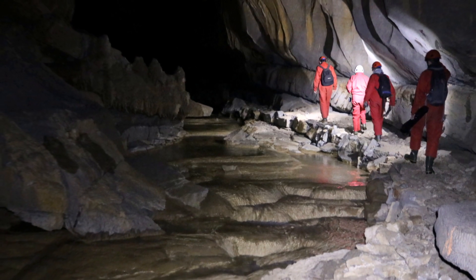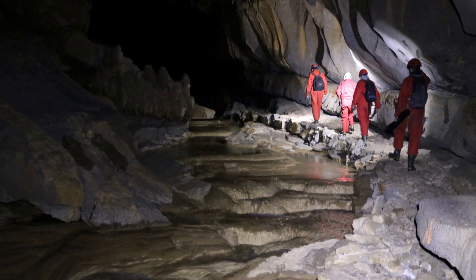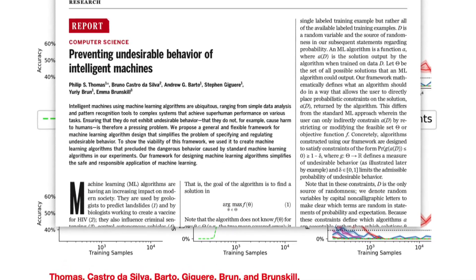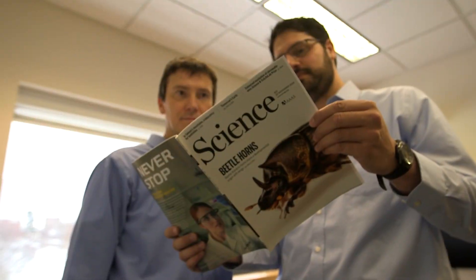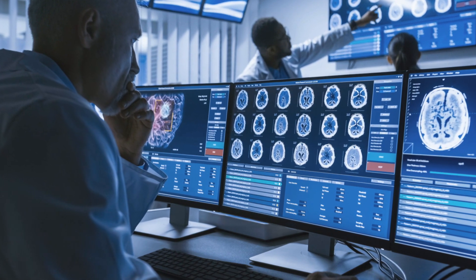This is important when the person using the algorithm is an expert in their own field — for example a medical expert or a geologist who knows all of the domain details — but they may not be an expert in machine learning and statistics. Seldonian algorithms make it much easier for users to make sure that bad behavior doesn't happen. Our work on the Seldonian framework is published in a journal called Science. The main contribution of the work is a framework for how to design machine learning algorithms.